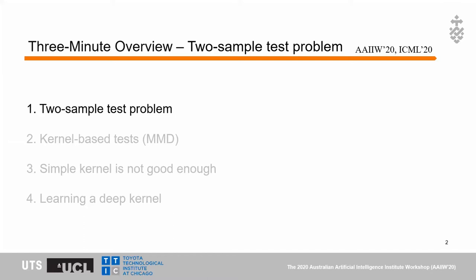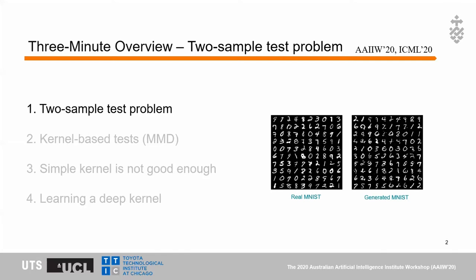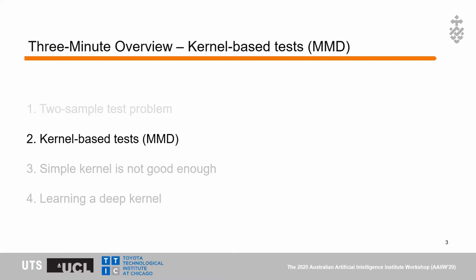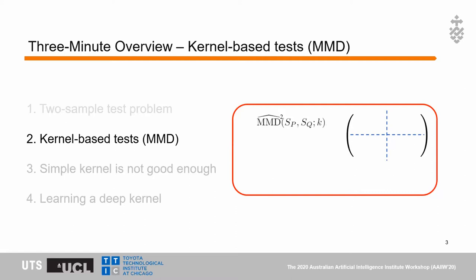In a two-sample test problem, we want to tell if two sets of samples are from the same distribution. Taking MNIST as an example, if we have the real MNIST data and the generated MNIST data, we can use a two-sample test to determine if they are from different distributions. A well-known method is based on kernel functions, called Maximum Mean Discrepancy, or MMD for short. MMD includes a selected kernel function k and two samples from P and Q.